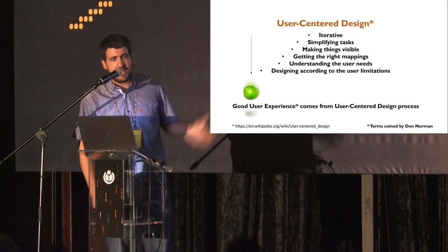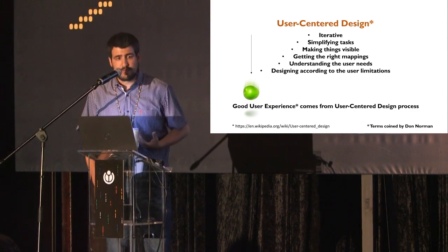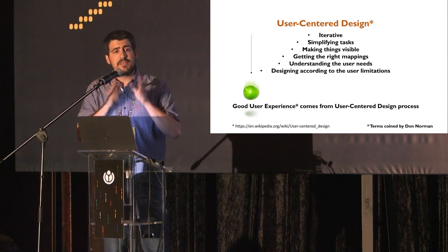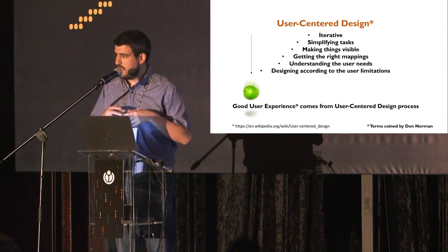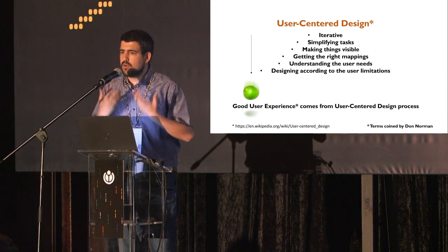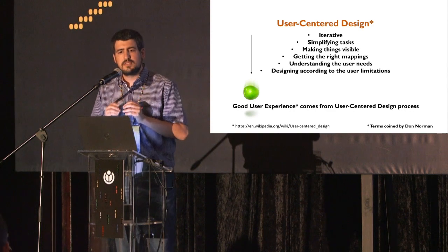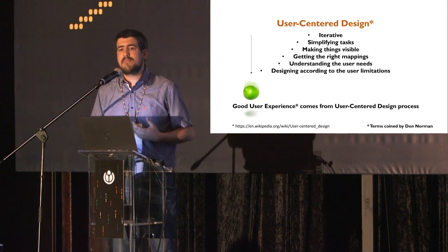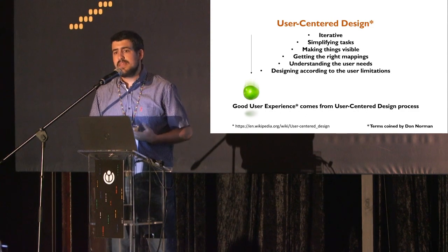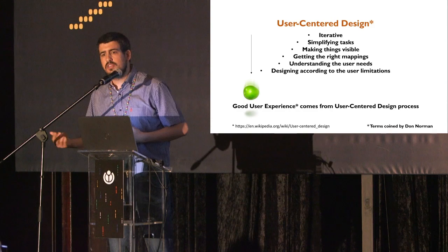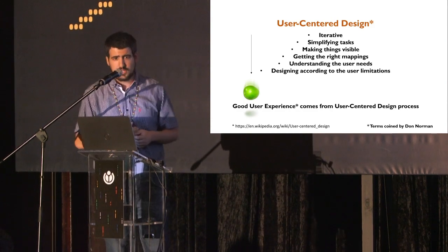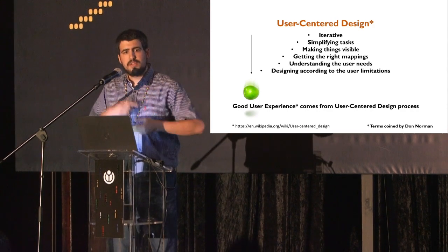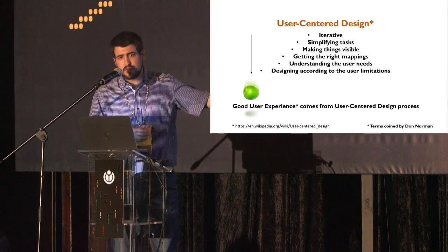The second principle is simplifying the task and making things visible. Third is getting the right mappings — ensuring consistency, so that a color or button with a certain meaning is consistently used with that same meaning. Understanding the user's needs was the main motivator, as well as understanding their limitations, whether cognitive, educational, and so on. If we apply a user-centered design process and keep redesigning, we'll eventually improve the user experience.